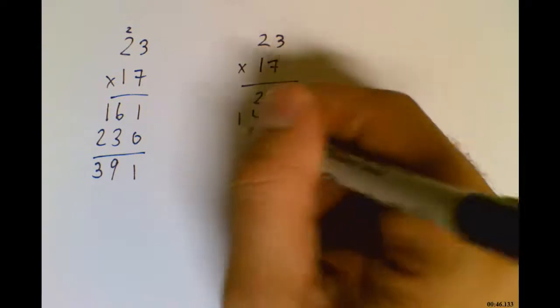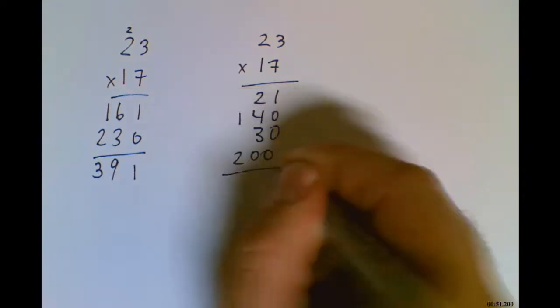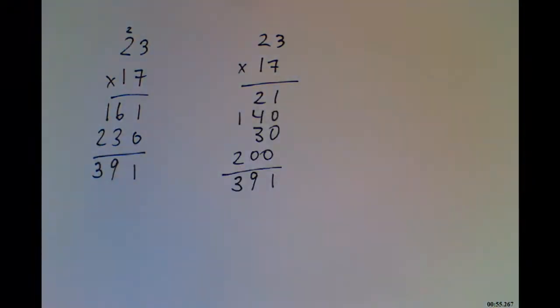3 times 10 is 30. 20 times 10 is 200. Now I add up. I get 391 again.